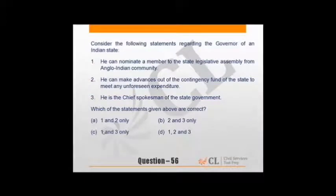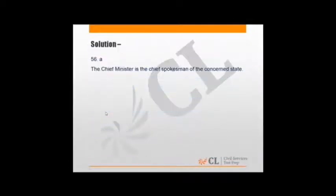Statements regarding governor of Indian state. He can nominate a member to state legislative assembly from Anglo-Indian community - yes, one member. He can make advances out of contingency fund of state to meet any unforeseen expenditure - correct. He is chief spokesman of state government - no, it is the chief minister who is chief spokesman. Easy question, third option is easy to exclude. Answer is A, option A is the correct answer.